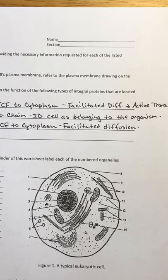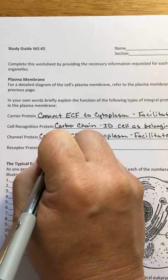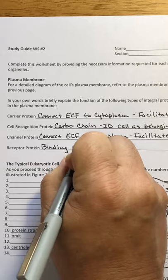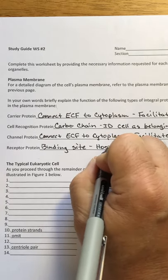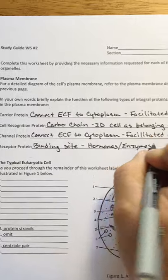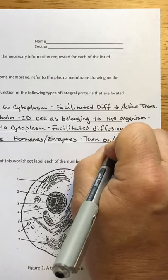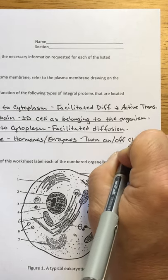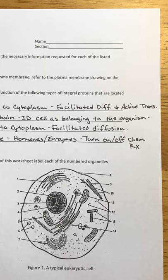The channel protein is basically like a conduit or a little channel between those two solutions, involved in facilitated diffusion. The example we talked about was the aquaporin, which is involved with a specific type of facilitated diffusion — the movement of water called osmosis. The receptor globular protein has a binding site where hormones and enzymes attach to turn on or promote chemical reactions inside the cell. That's a pretty brief overview, covered in previous lectures and the voiceover PowerPoints.